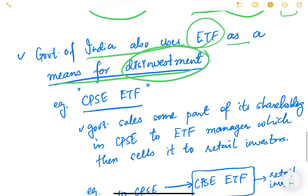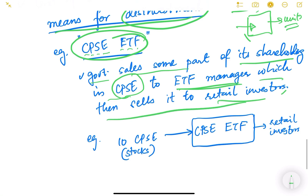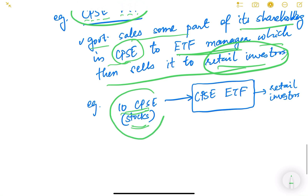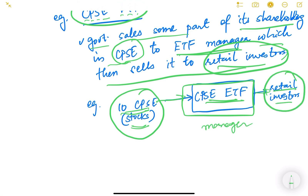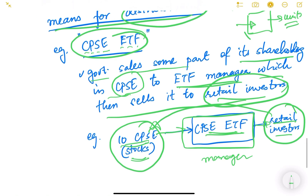The Government of India has also introduced ETFs as a means of disinvestment. For example, if the government wants to dilute its shareholding in a Central Public Sector Enterprise (CPSE), it can package the shares of several CPSEs together into one fund — these are known as CPSE ETFs. The government sells part of its shareholding in CPSEs to an ETF manager, who then sells units to retail investors. This is how the government receives money through disinvestment. If you have any doubt, please ask in the comment section — we will continue equity financing in the next video.